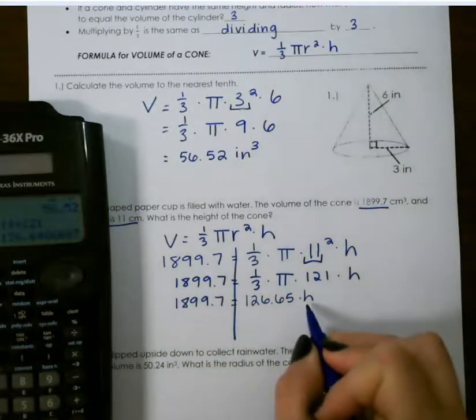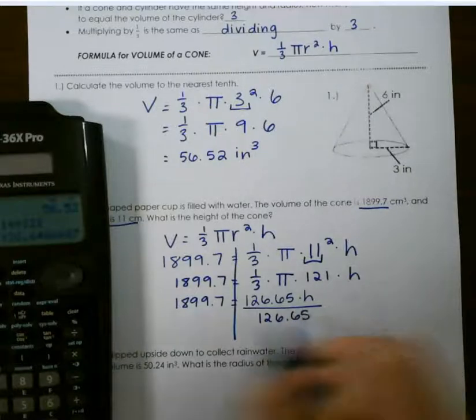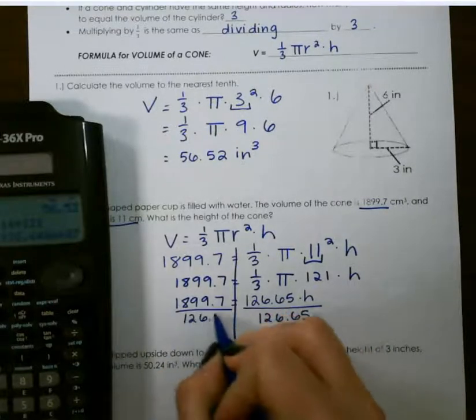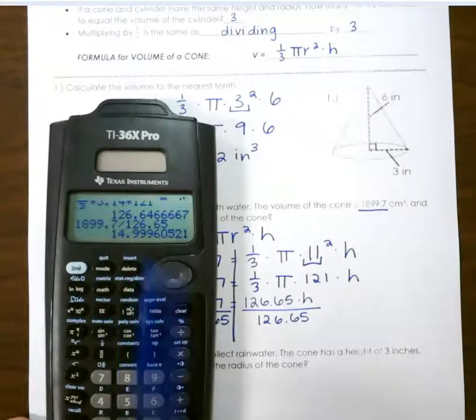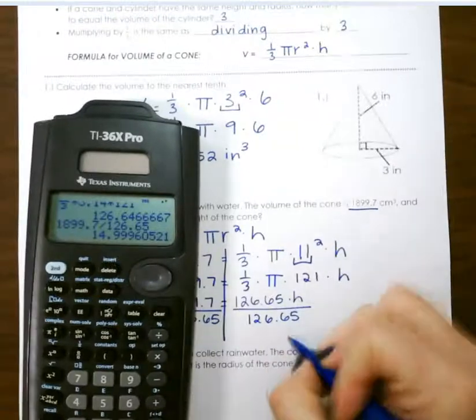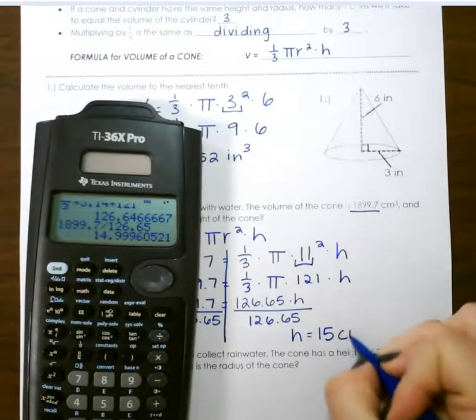Then to get h by itself, I do the opposite of multiplication, which is division. So when I divide, I get 14.9996, which would just round to our height being 15 inches.